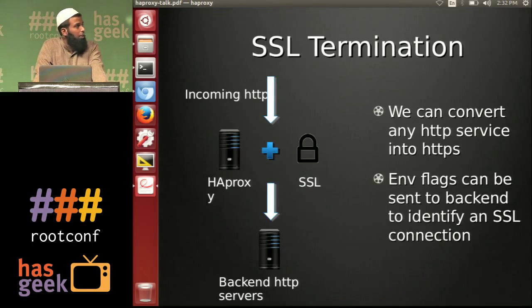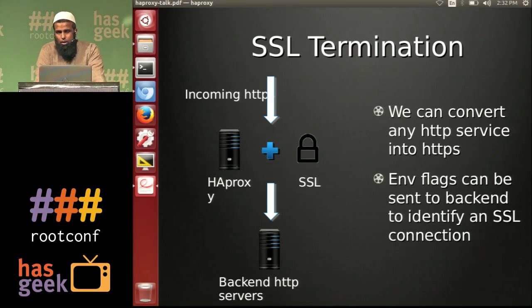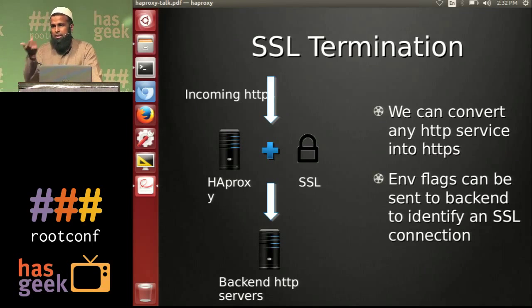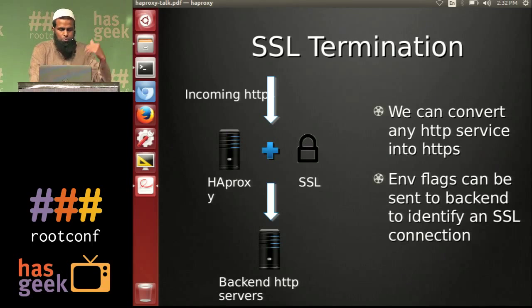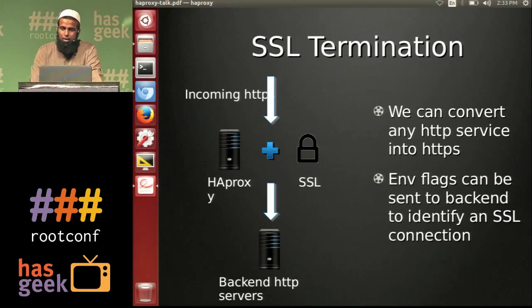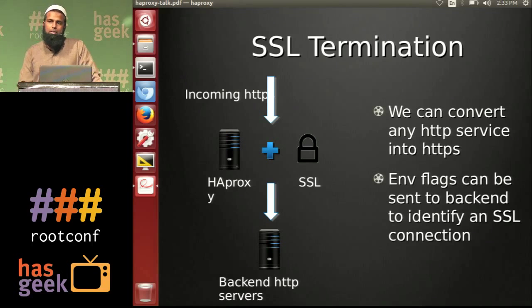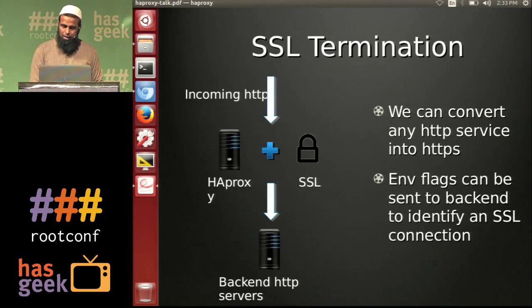SSL termination is very simple — you can convert any non-SSL application to an SSL service. HAProxy provides an environment variable to signal to the backend Apache that the connection is SSL, and your application can use those variables to detect it. This is important because, for example, Tomcat containers receiving HTTP requests will assume the connection is HTTP and give out HTTP URLs. If you indicate via an environment flag that it is actually SSL traffic, your Tomcat can give out all relative URLs in SSL so your browser doesn't complain about mixing SSL and non-SSL content.